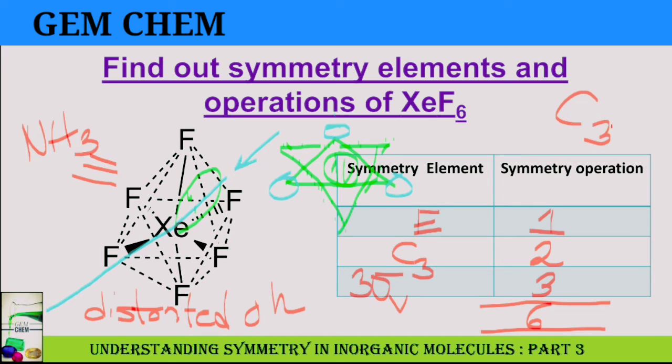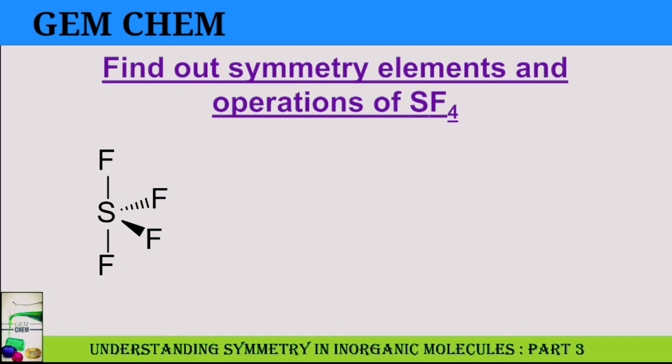Now we are going to deal with SF4. From here only you can understand that it has T-shape. How these geometries come is already being discussed in VSEPR theory video. You can watch that; I will give the link in the description box as well as the I button.